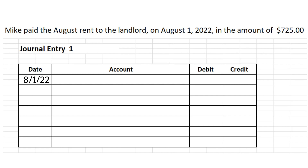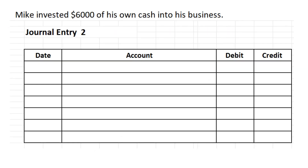Under the account section we list rent expense, then under the next column we list $725 as a debit. Then we go down one line and list cash — cash is affected as well — and cash will be on the credit side, so we list $725 on the credit side. That's how you do a journal entry with debits and credits for this example.